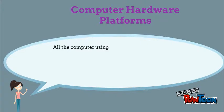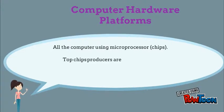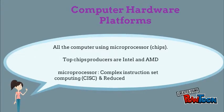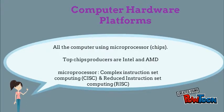All computers use microprocessors, also known as chips. The top chip producers are Intel and AMD. Intel introduced CISC with thousands of instructions in a chip. For mobile devices, RISC is used, which contains a smaller set of instructions.